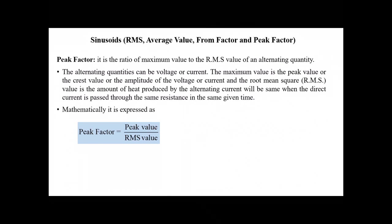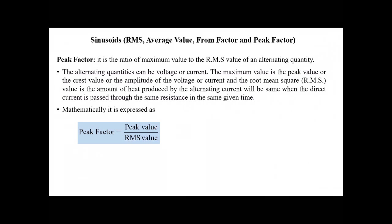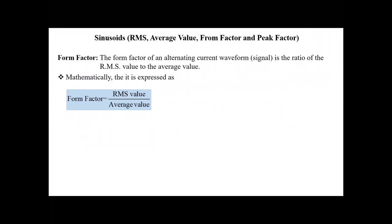Peak factor is the ratio of maximum value to the RMS value of an alternating quantity. Mathematically, peak factor equals peak value divided by RMS value. Form factor of an alternating current waveform is the ratio of the RMS value to the average value, expressed as: form factor equals RMS value divided by average value of the given waveform.